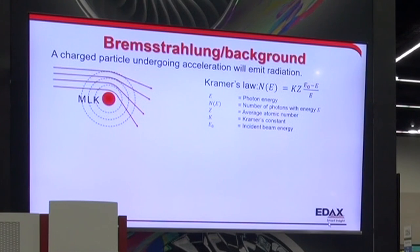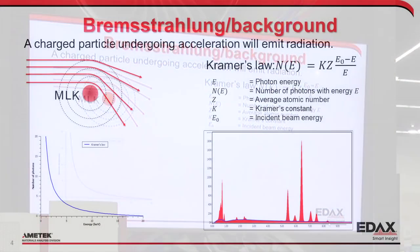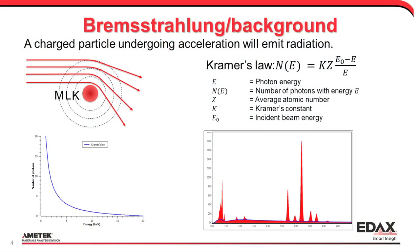The emitted radiation from this can be described by Kramers' law. Basically, the number of photons depends on the average atomic number of the sample — the larger the core, the more positive charge, the more we bend the incoming electrons — plus Kramers' constant and the incident beam energy. So it changes with the acceleration voltage of the microscope as well.